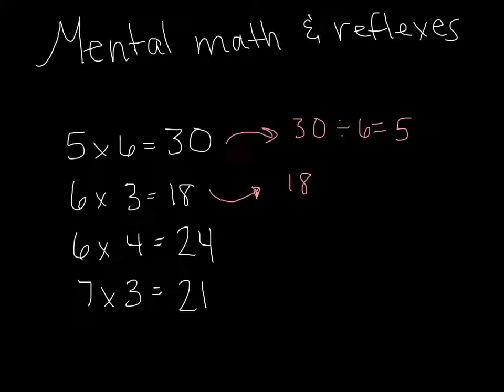Right, we could do 18 divided by 3 or divided by 6 equals the opposite number. How about for 6 times 4 equals 24? Right, 24 divided by 6 is 4, or 24 divided by 4 is 6.